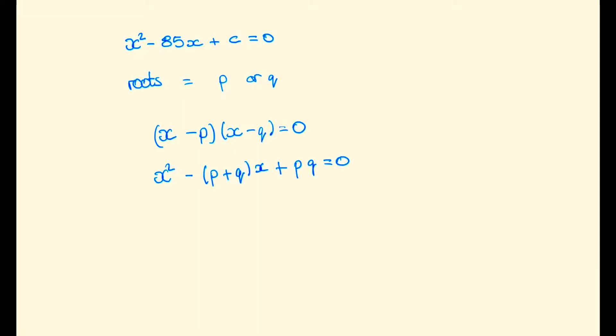So that is telling us that p plus q is 85 and pq is equal to c. Since p and q are both prime numbers and they sum to an odd number, it follows that one of p or q must be even.